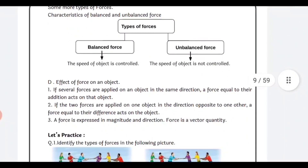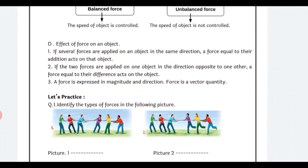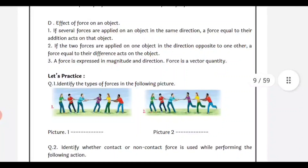Some more types of forces: balanced force and unbalanced force. In balanced force, the speed of the object is controlled; in unbalanced force, we cannot control the speed of the object. The effects of force on an object: first, if several forces are applied in the same direction, a force equal to their addition acts on that object. Second, if two forces are applied in opposite directions, a force equal to their difference acts on the object. Third, force is expressed in magnitude and direction — force is a vector quantity.